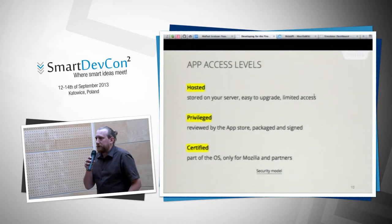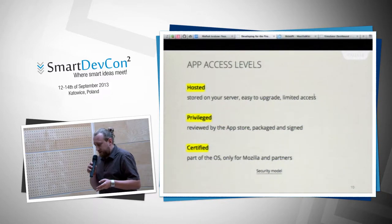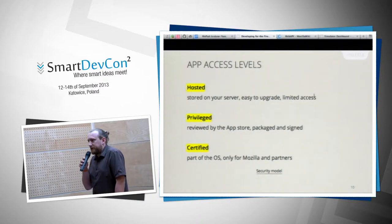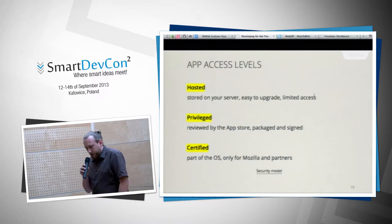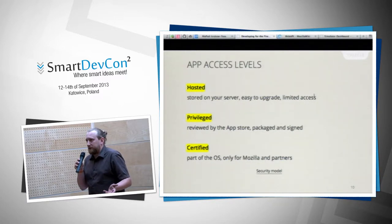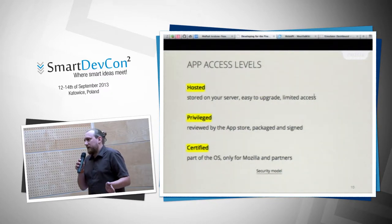There are three app access levels — not all APIs are available to all apps. Hosted apps are created from a website without uploading to the marketplace, but they are untrusted. Privileged apps are packaged, sent to the marketplace, signed, and downloaded from there. Certified apps are only available to the OS — for example, if a company wants to provide additional features for employees like a credit card reader, they can modify Firefox OS and provide a custom certified build.